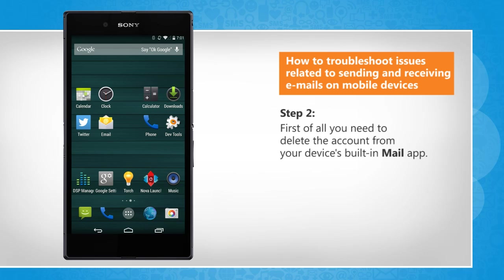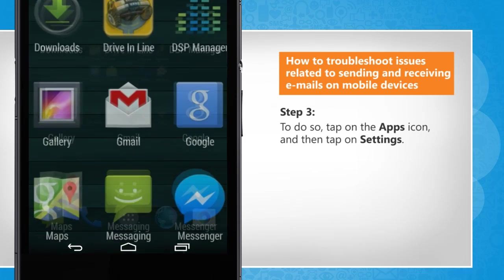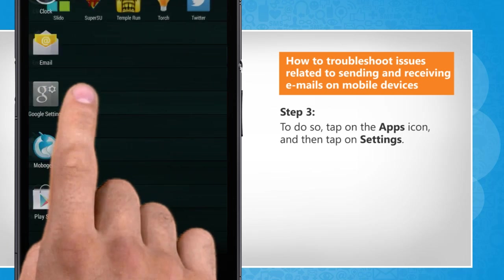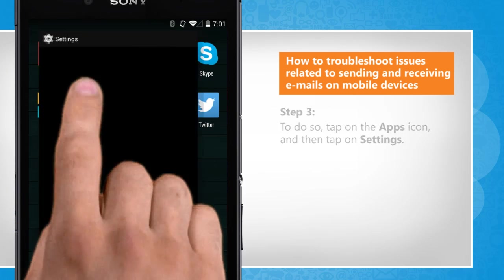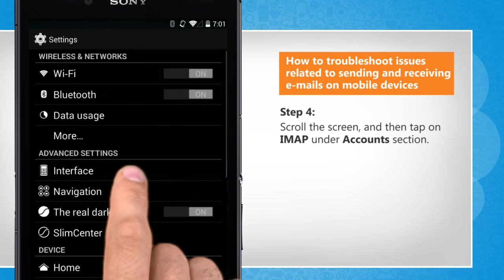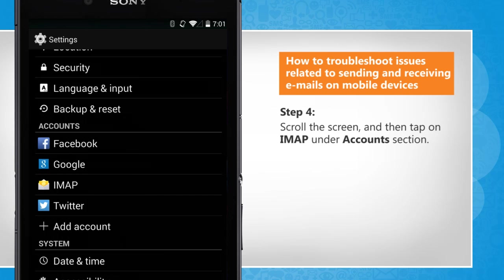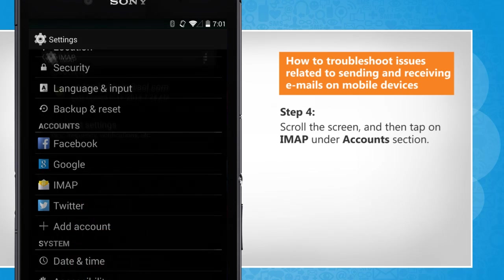First of all, you need to delete the account from your device's built-in mail app. To do so, tap on the app's icon and then tap on Settings. Scroll the screen and then tap on iMap under the Account section.